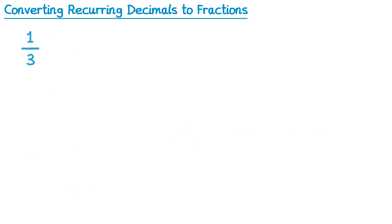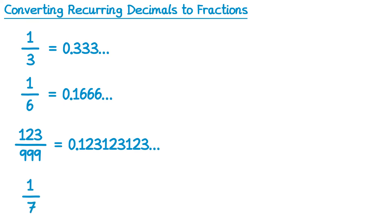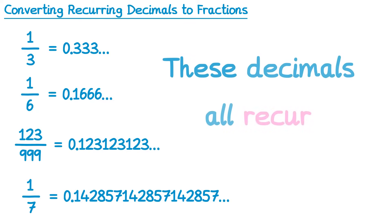You're probably aware of 1 third, which is 0.33333, and that 3 goes on forever. 1 sixth gives you 0.166666, and that 6 goes on forever. You've even got fractions like 123 over 999, which is 0.123123123, and that whole section of 123 repeats forever. And you've even got 1 seventh, where there's a very large section of repeated numbers. We would say that these decimals all recur because they have a repeating pattern to them that never ends.